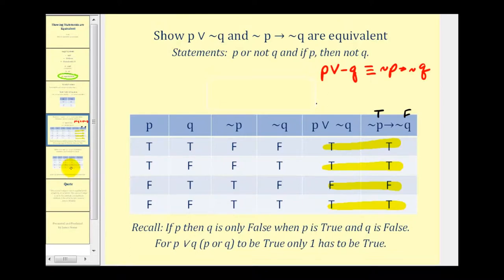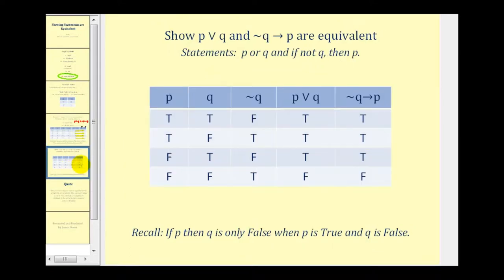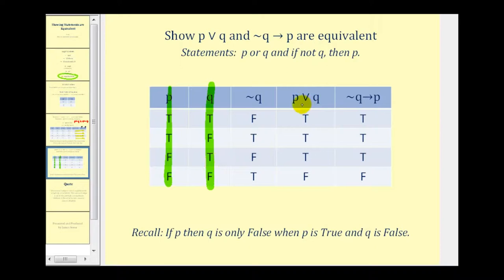Let's take a look at one more. Here we want to show that p∨q and if ¬q then p are equivalent. Notice this one does not require ¬p, so we have columns p, q, and ¬q. For p∨q, we look at the first two columns — it's an or, so it only requires one to be true, and it'll only be false when they're both false. That's the only time p∨q is false; everywhere else it's true.